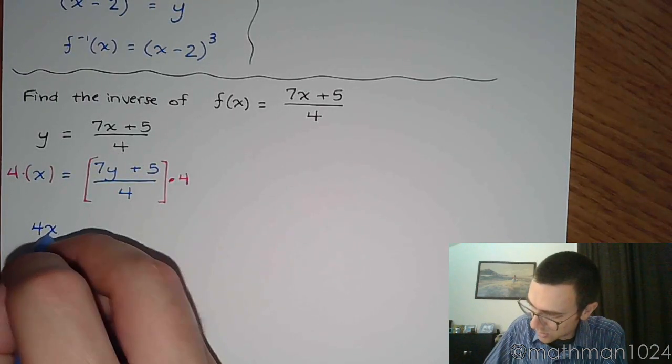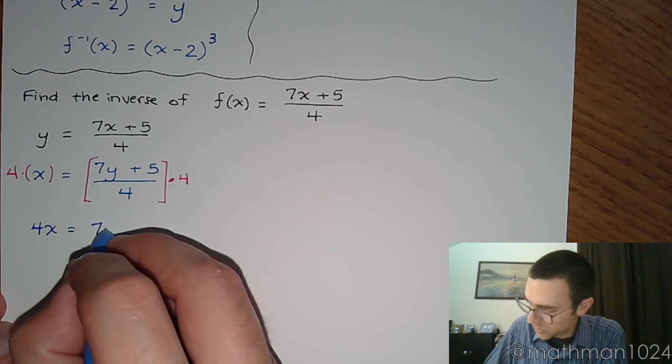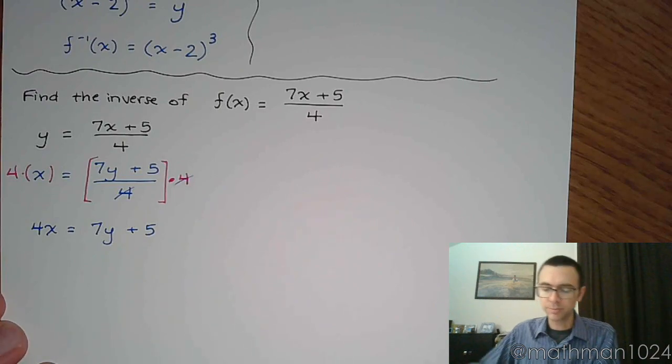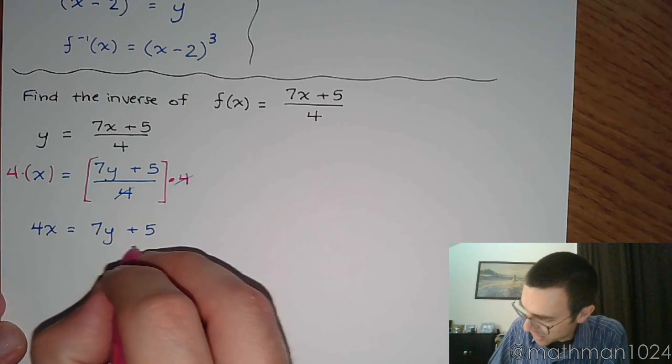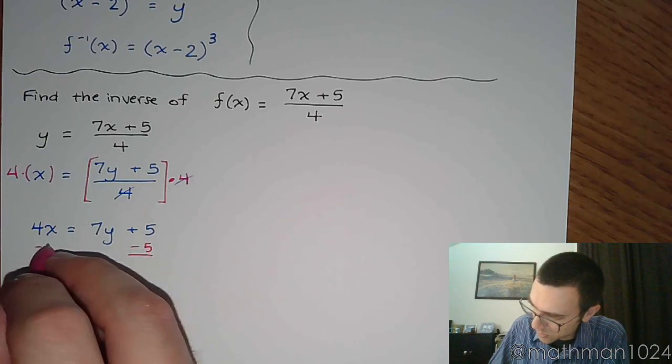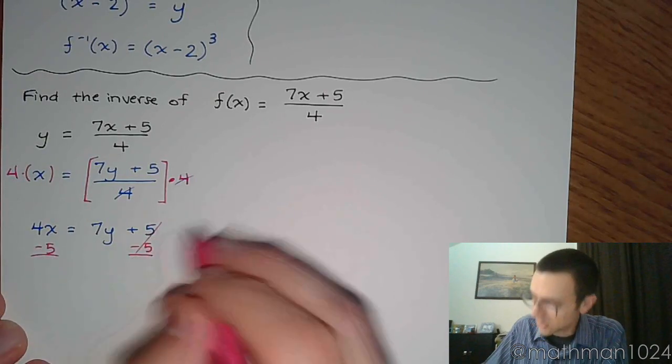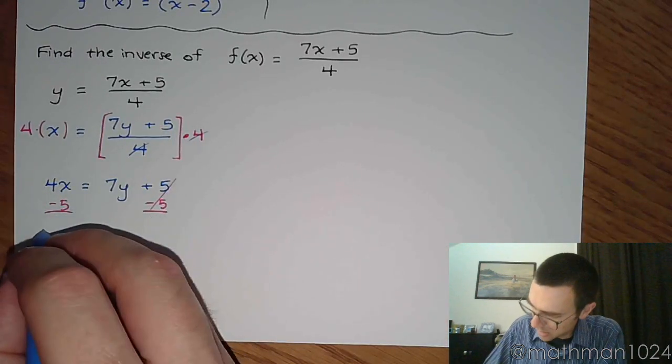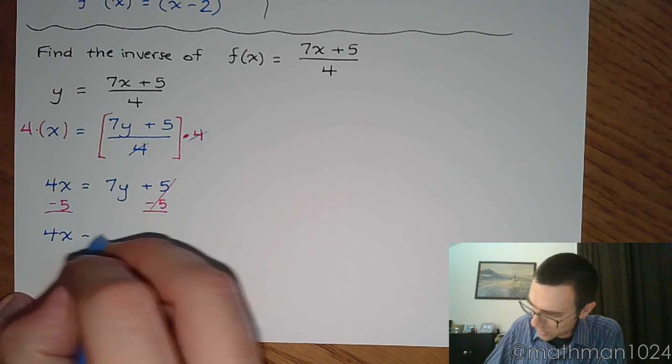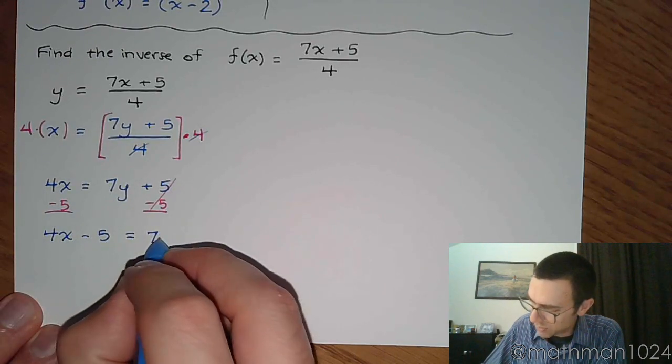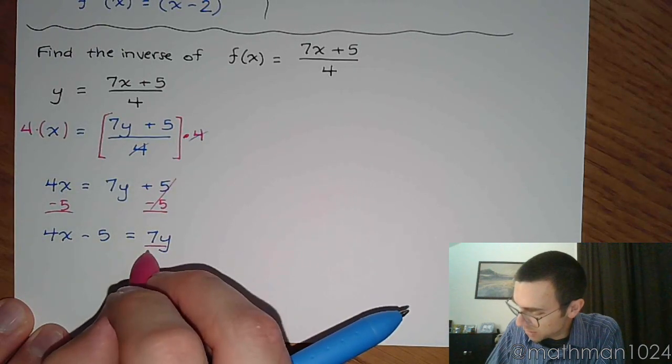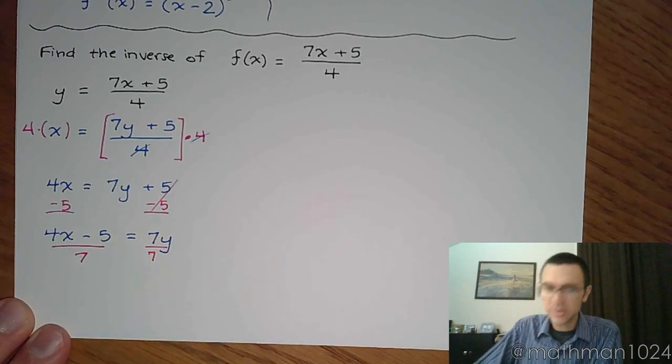All right. So now we have 4x is equal to 7y plus 5, because those guys reduce. The next step for getting y by itself is to subtract the 5. So subtract 5 on both sides, so the guy's got to go away. So 4x minus 5 equals 7y. We are one step away from getting y by itself. We just need to divide both sides by 7, like that.